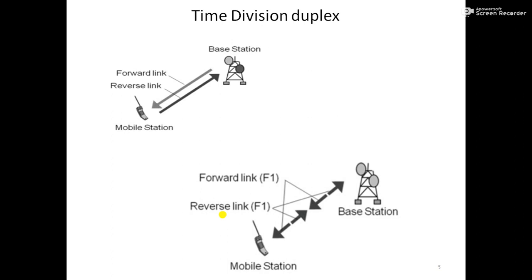The second prerequisite for CDMA is Time Division Duplex (TDD). TDD is a technique by which uplink and downlink transmissions are carried over the same frequency using synchronized time intervals. The carrier uses a 5 MHz band. The available frequency bands for TDD will be 1900–1920 MHz and 2010–2025 MHz.